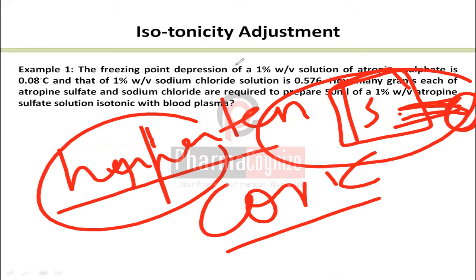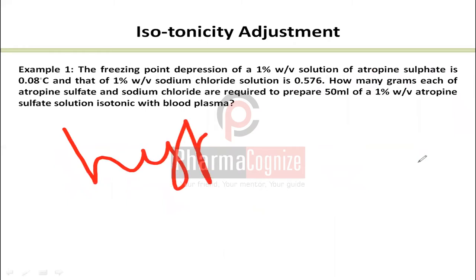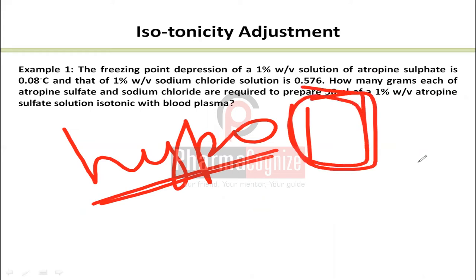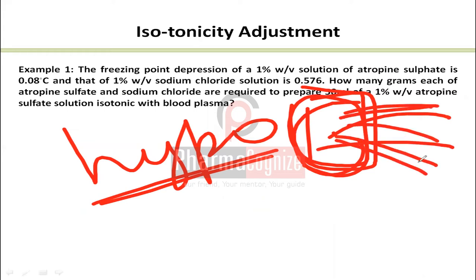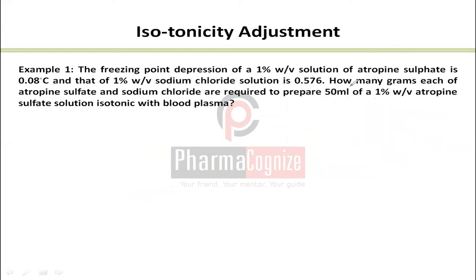But if we give a hypotonic solution — hypotonic means lower concentration of solute, so water is more — then water from the solution will enter the RBCs, causing them to swell and burst. These are life-threatening problems, so we must ensure that parenteral solutions are isotonic with blood, having the same tonicity and osmotic pressure.